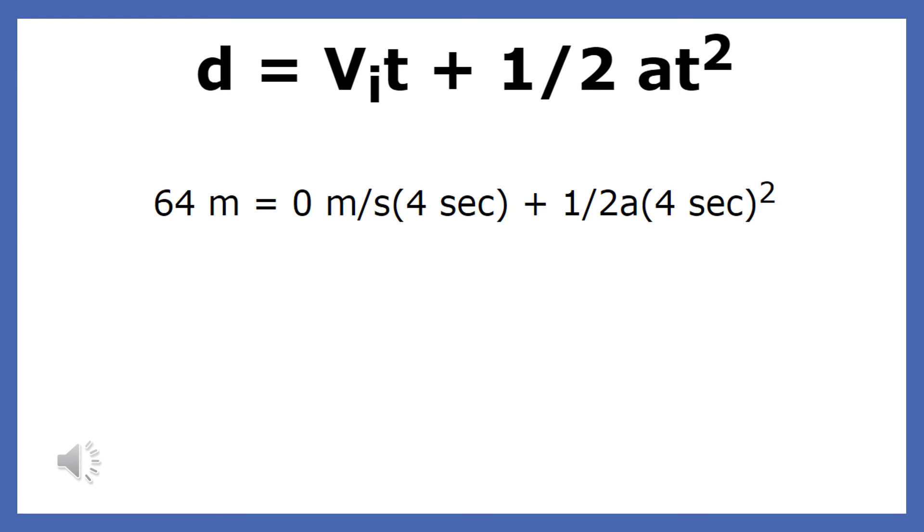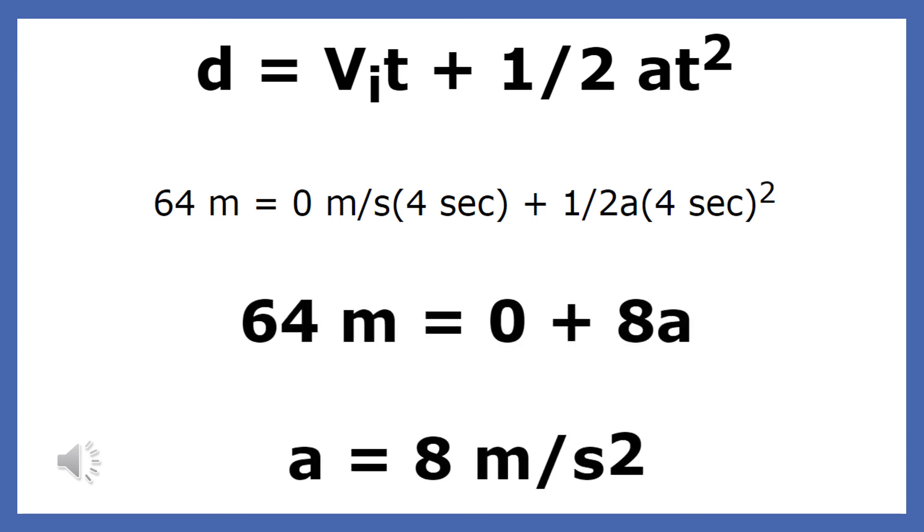Here is the substitution with units to find the acceleration. In the last step, we must divide both sides of the equation by 8 to isolate the unknown.